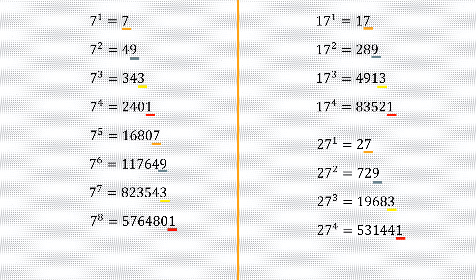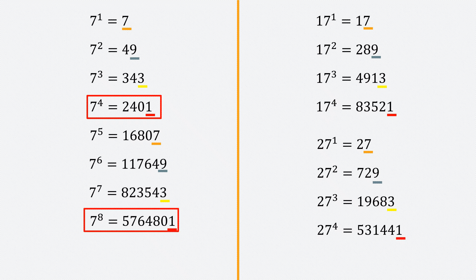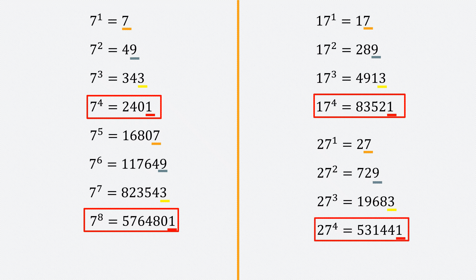Whenever the power is 4 or a multiple of 4, the expansion will end in a 1. For example, 7 to the power 4 is 2401 — unit digit 1. 7 to the power 8 is 57648001 — unit digit 1. 17 to the power 4 is 83521 — unit digit 1. That means whenever 17 is raised to a multiple of 4, the unit digit is 1.